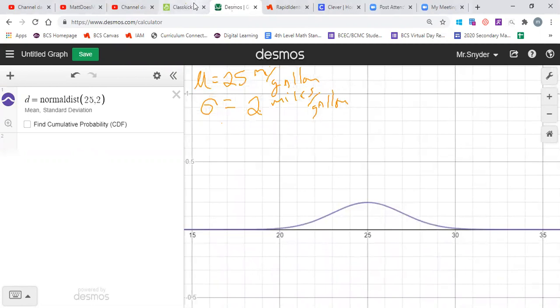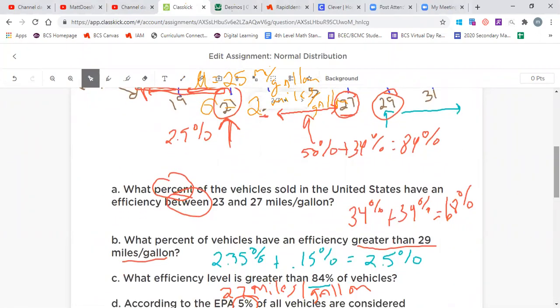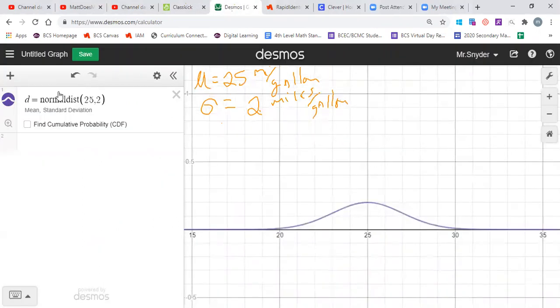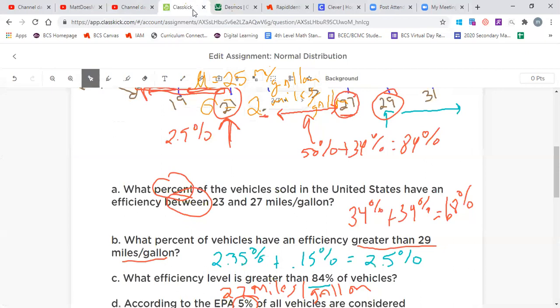So let's go ahead and we'll answer a couple of questions off of here, just verify some of our work. It says what percent of the vehicles sold in the United States have an efficiency between 23 and 27, and we found our answer to be 68 with the empirical rule, so let's go to Desmos and just verify that. You'll see that underneath normal dist it'll say find cumulative probability CDF. What you got to do is click on that and you put in the minimum, so the minimum we were looking for was 23, the maximum was 27. If we put in 23 and 27 it will give us approximately 0.6826 or 27, and that's roughly about 68 percent, verifying the answer that we were given on part a.